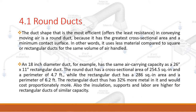Round ducts. The duct shape that is the most efficient and offers the least resistance in conveying moving air is a round duct, because it has the greatest cross-sectional area and a minimum contact surface. In other words, it uses less material compared to square or rectangular ducts for the same volume of air handled. For example, an 18-inch diameter duct has the same air carrying capacity as a 26x11 rectangular duct.